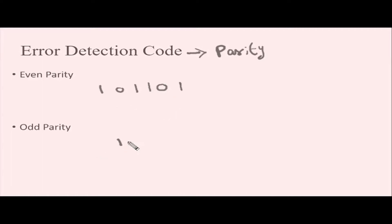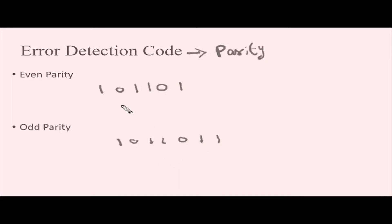Similar case for odd parity. If I count the number of ones present in this bitstream, I get an even number of ones. If I want to make this odd, I will simply add another bit. Whatever additional bit I am adding which makes that particular bitstream odd parity, I call that the odd parity bit. Now the total number of ones present is odd. So this is what we call even parity and odd parity.